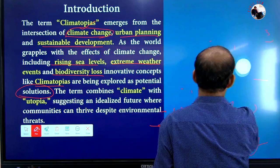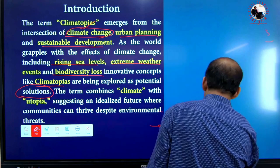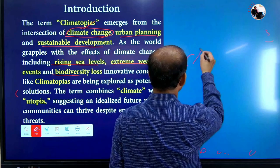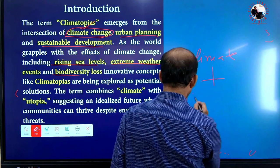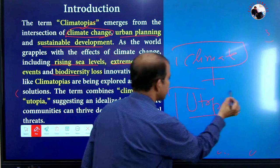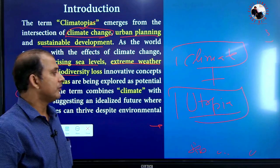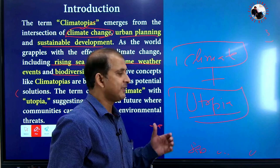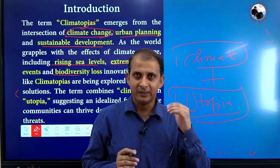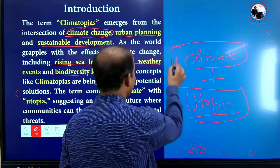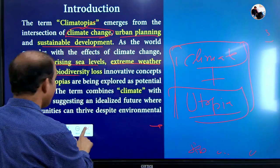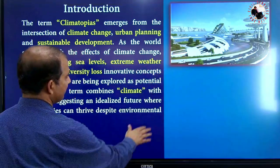Climatopias is a term combined from 'climate' plus 'utopia.' Climate refers to how to fight the climate, and utopia means an emerging ideal society — one in which all people are bound by law in an ideal situation. It is a visionary concept, and we must adopt this ideal situation.